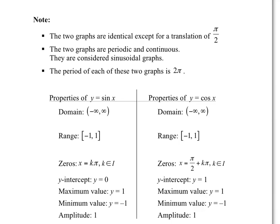So the cosine graph and sine graph are exactly the same graph, just a different translation. Some key notes: the two graphs are identical except for a translation of pi over 2. The two graphs are periodic and continuous — they're considered sinusoidal graphs. They continue to infinity and repeat the same pattern over and over.